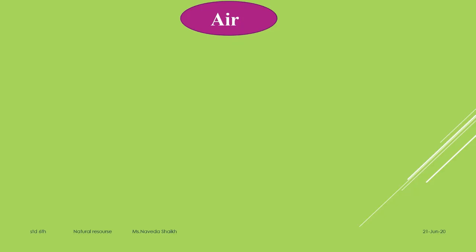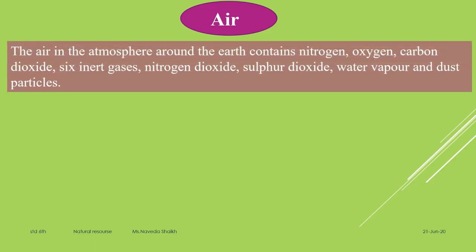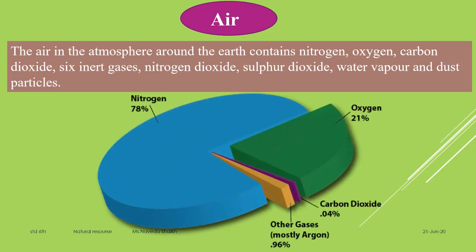The very first natural resource we are going to talk about is air. Today's period is dedicated to air. The air in the atmosphere around the earth contains nitrogen, oxygen, carbon dioxide, and six inert gases, as well as nitrogen dioxide, sulfur dioxide, water vapor, and dust particles. This is a graphical representation of how much nitrogen is present in our air: there is 78% nitrogen, 21% oxygen, 0.4% carbon dioxide, and the remaining approximately 1% is other gases, mostly inert gases.